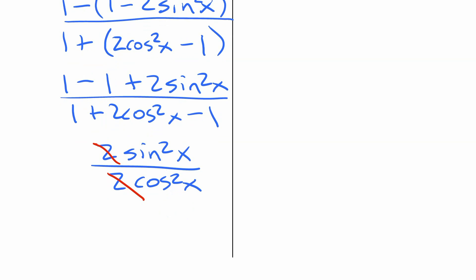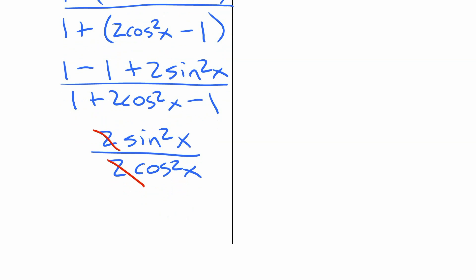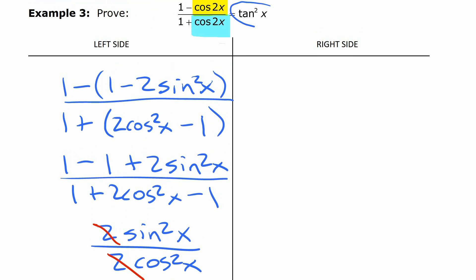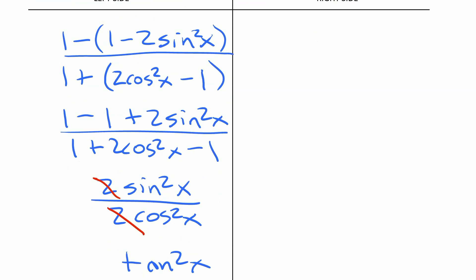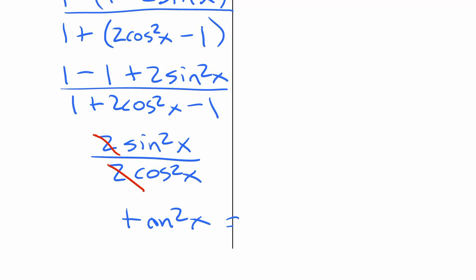Sin squared x over cos squared x — sine over cosine is tangent, so sin squared x over cos squared x is tan squared x, which is what we were working on making it equal to on the other side. So we can say as our last step, tan squared x equals tan squared x. Left side equals right side — so we've done it.